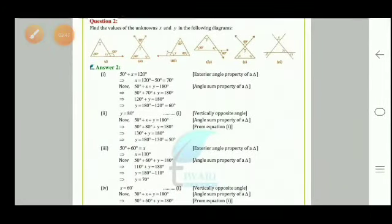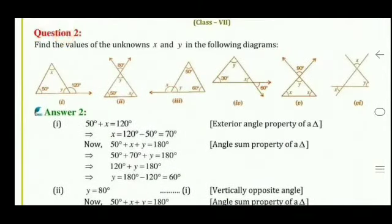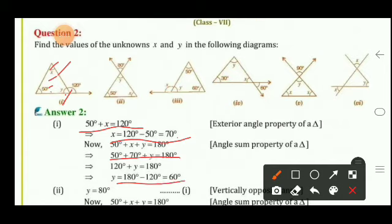Part 2 — y = 80° because these are vertically opposite angles. Then using angle sum property: 50 + 80 + x = 180, so 130 + x = 180, giving x = 50°.